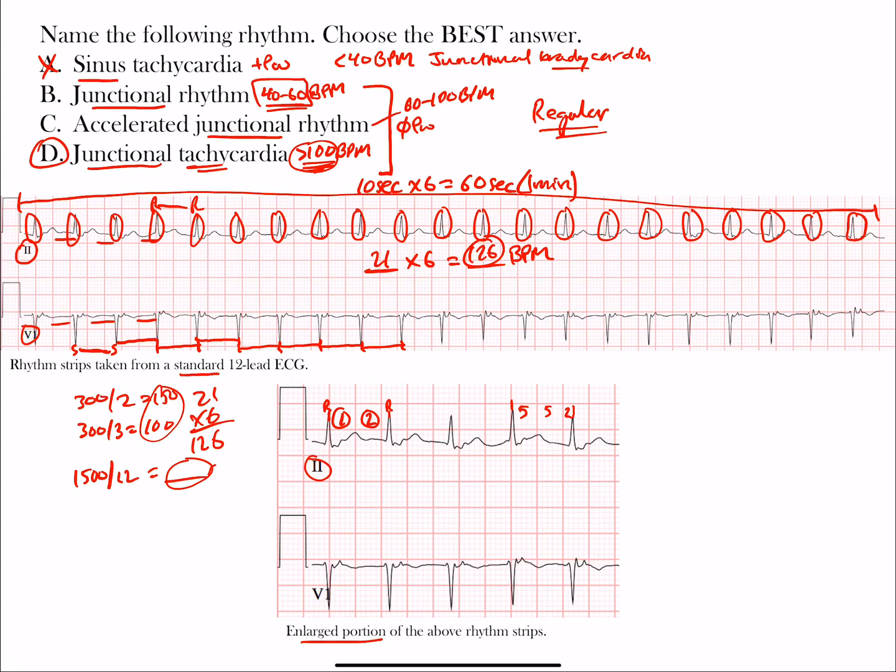We can only use these methods with regular rhythms, whereas counting complexes and multiplying by 6 can be used for irregular or regular rhythms. Choose that one because you can use it with both.